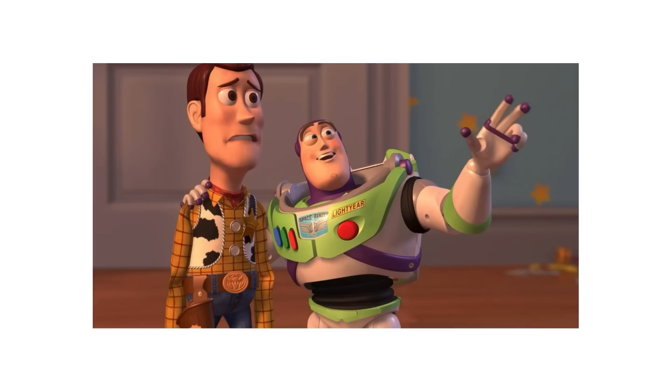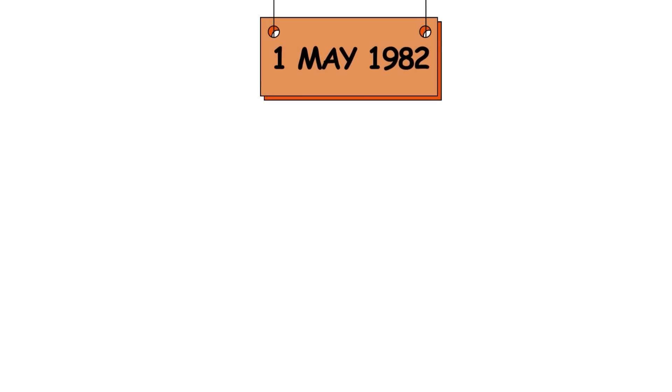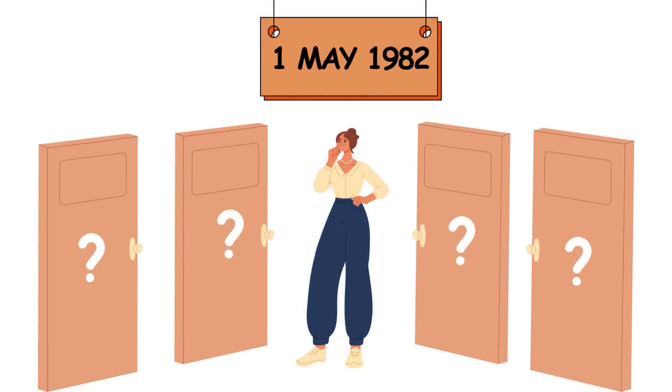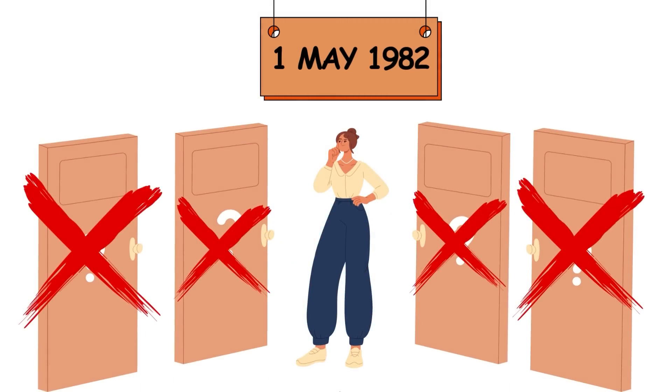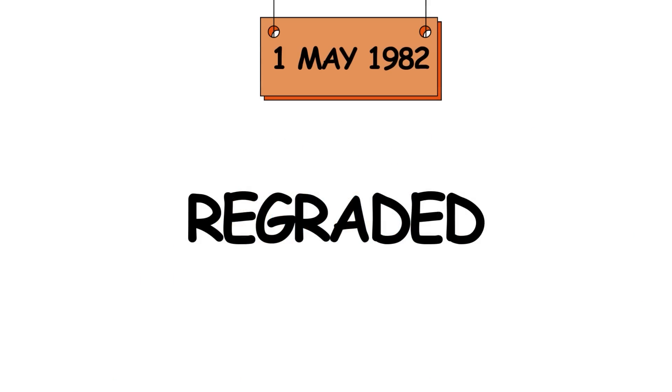Don't worry if you can't grasp this problem. Apparently, neither could the writers of a college admissions test. On May 1st, 1982, the SAT had a multiple-choice question regarding this problem, where every single option was wrong. Three students wrote in about the error, and the tests were subsequently regraded.